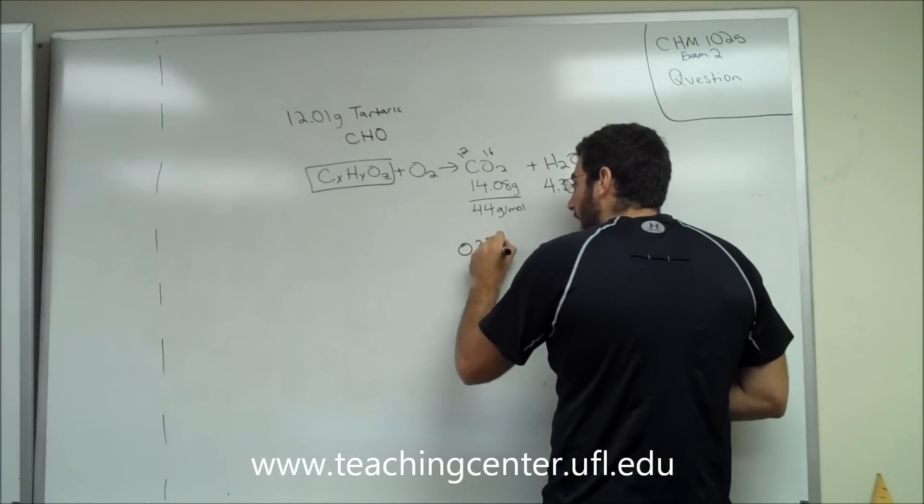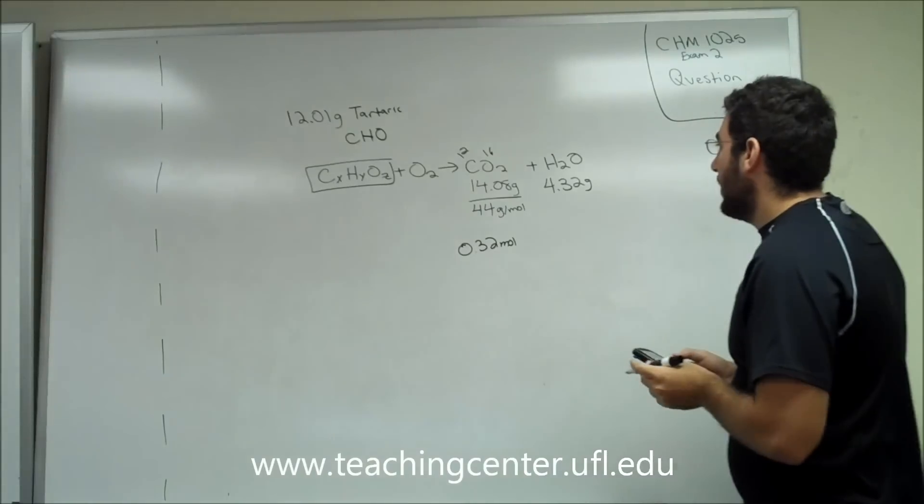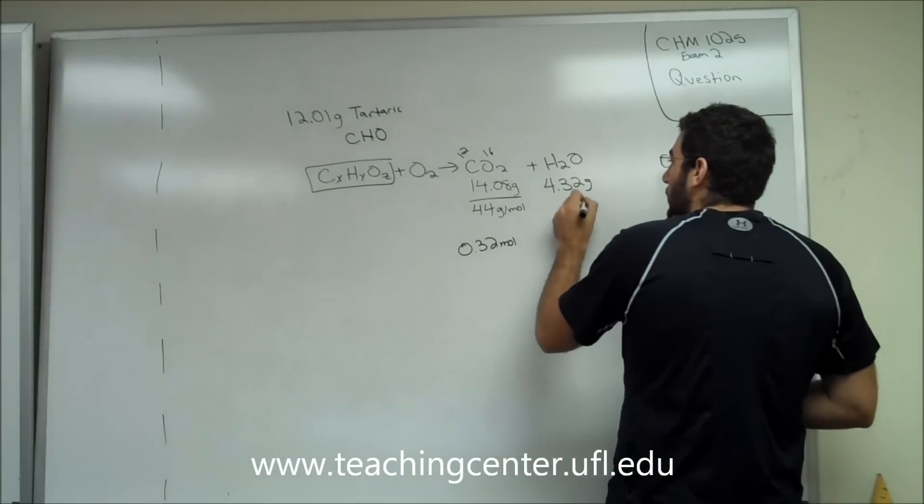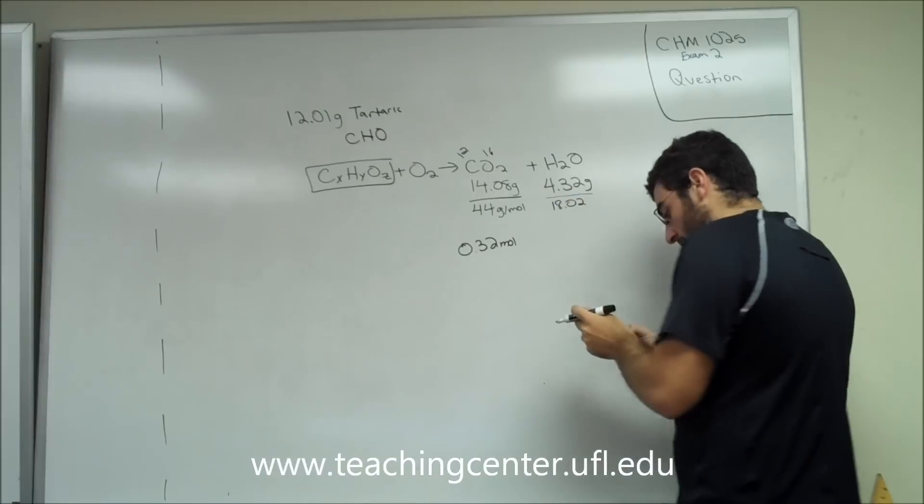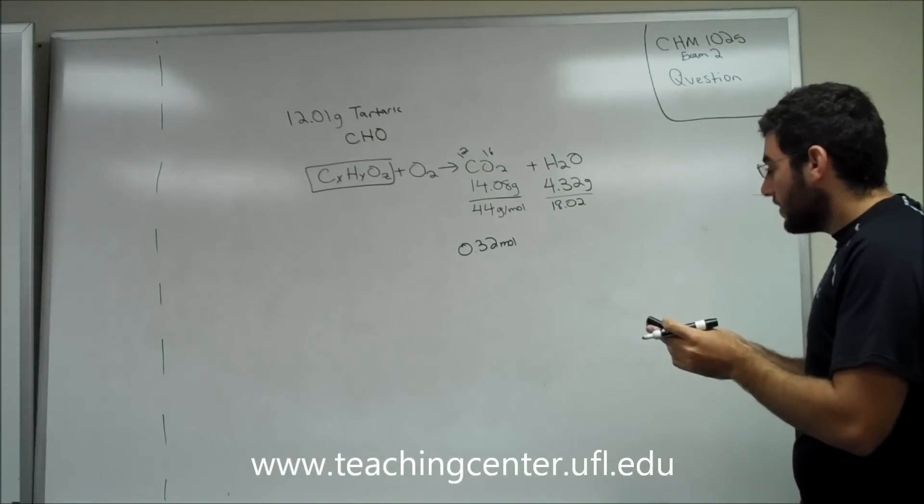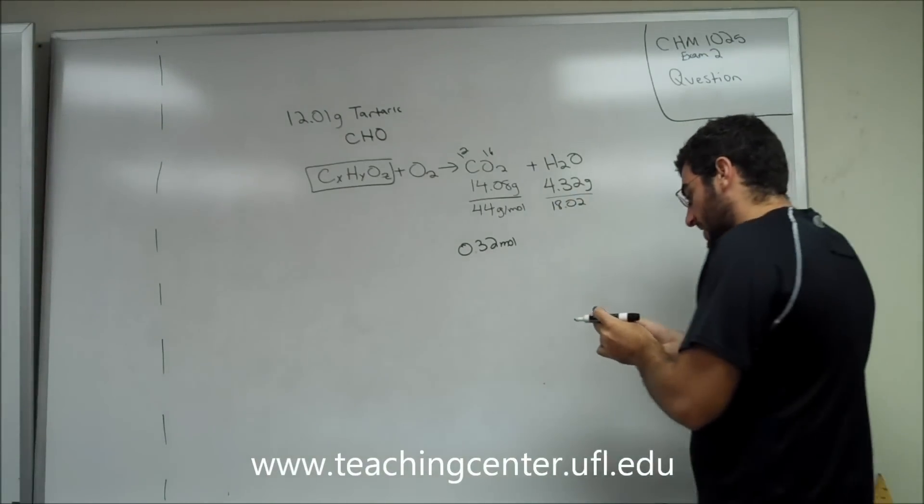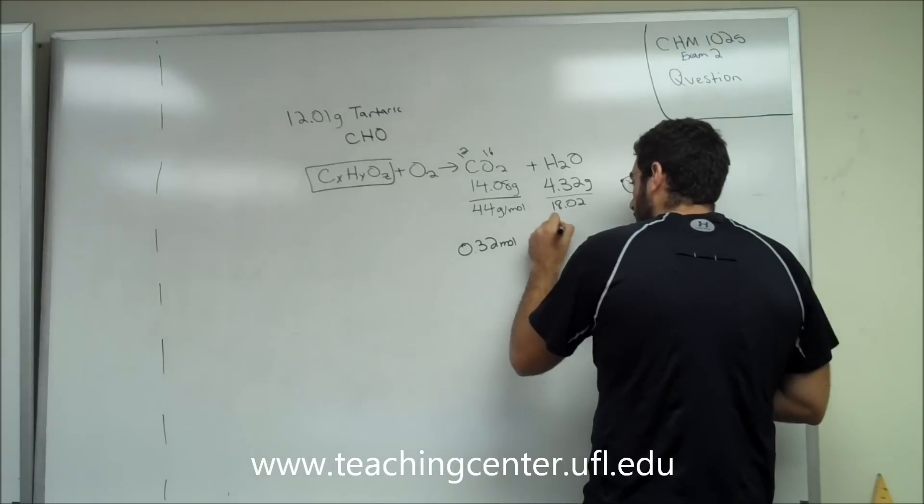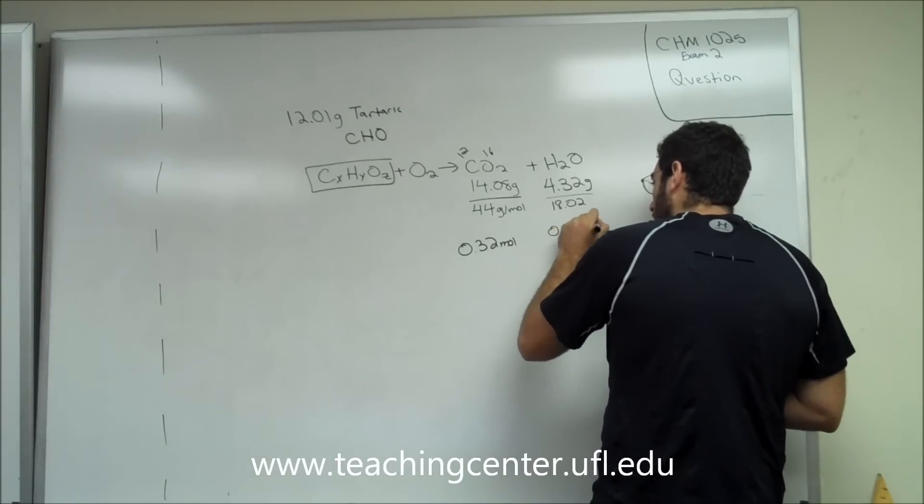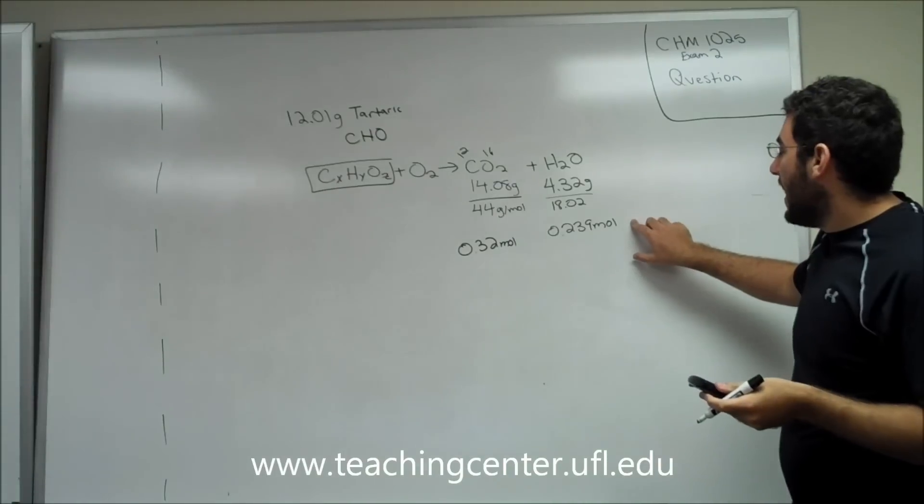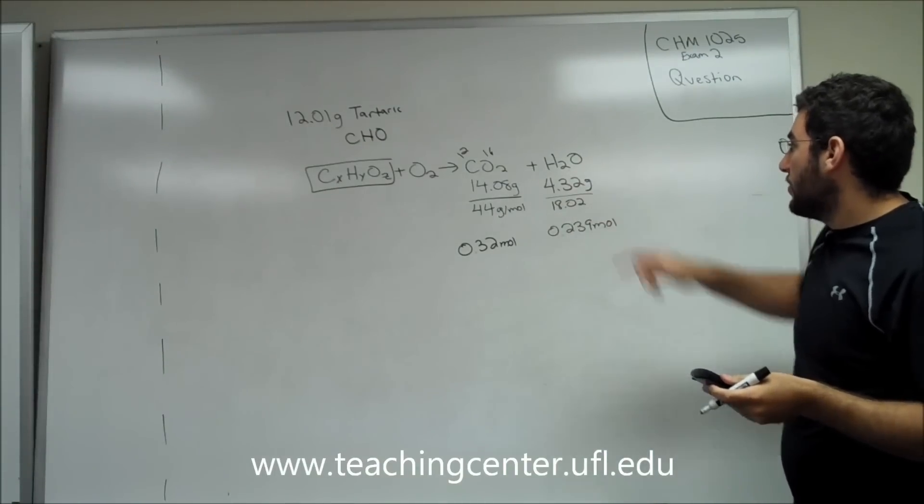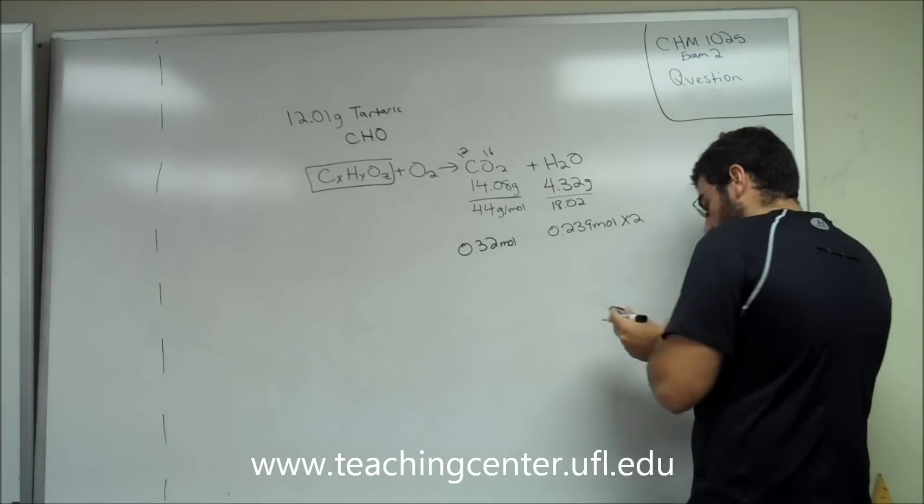Now that we know how many moles it is, let's go ahead and do the other side. So we have 4.32 divided by about 18.02, gives us 0.239 moles. But remember that when we're doing hydrogen, there's two hydrogens, so we have to multiply that by 2.